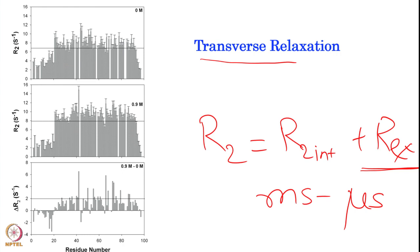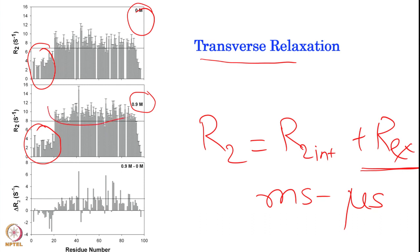As an example: this is a transverse relaxation rate measured for a protein at 0 molar urea concentration, and we add a mild denaturant at 0.9 molar and measure the dynamics again. As expected, the termini have lower or slower rates. The folded domain has higher R2 rates, and the termini again have lower R2 rates. If you take the difference — 0.9 molar versus 0 molar — many residues show higher R2.